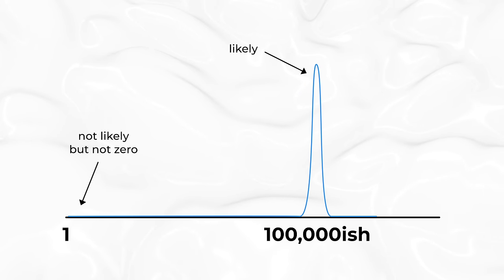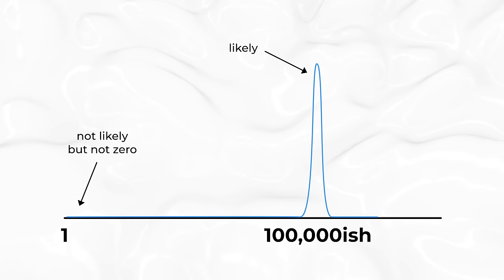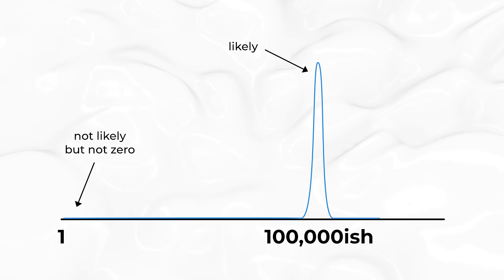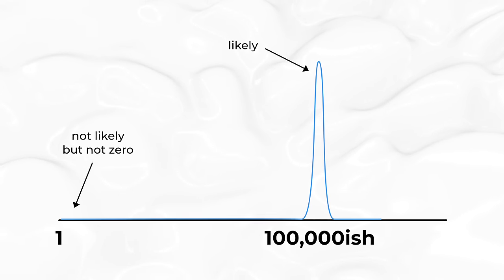Where the curve is high, lots of those particles exist. Where the curve is low, very few do. And we see that while the number that exists down at one are very small, they're not zero.